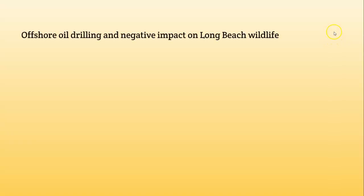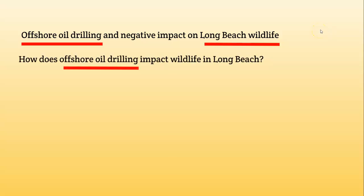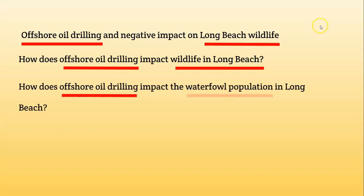Let's take this in another direction — environmental science. The first draft is 'Offshore oil drilling and Long Beach wildlife.' It's not as overly broad as the first example, but it's still overly broad — somewhere in the neighborhood of a two, definitely not a four or five. Moving to: 'How does offshore drilling impact wildlife in Long Beach?' — we've gone from a topic statement to a question, which is an improvement, but still overly broad. Then: 'How does offshore drilling impact the waterfowl population in Long Beach?' — now I know where I'm looking and what I'm looking at.